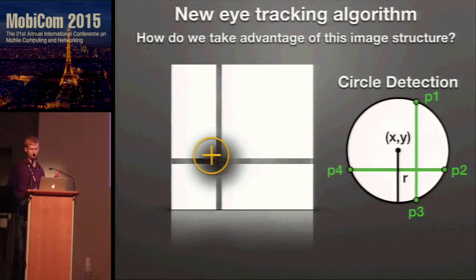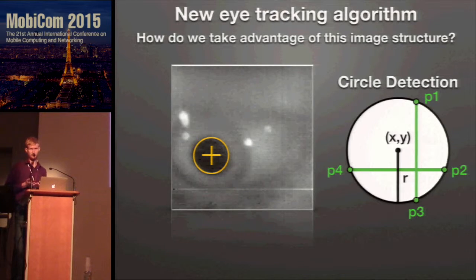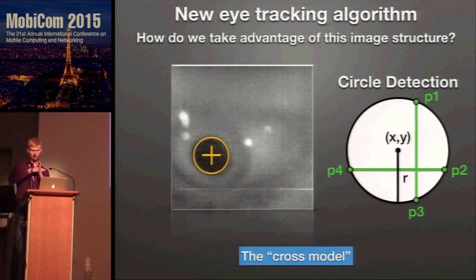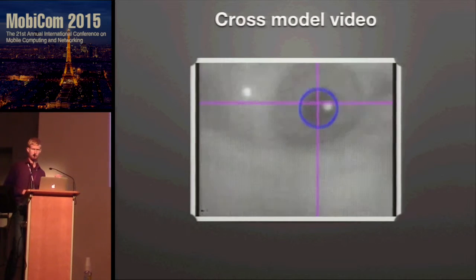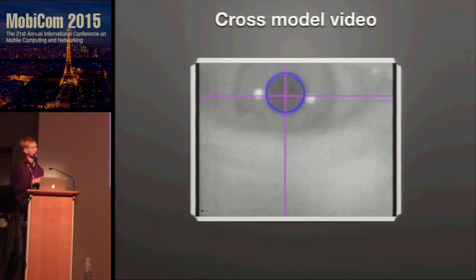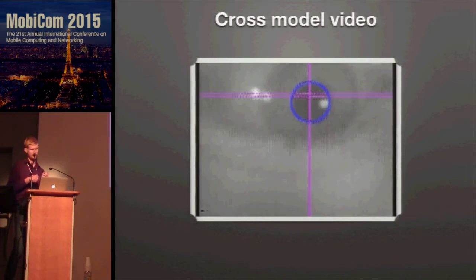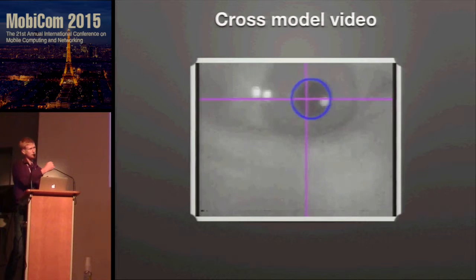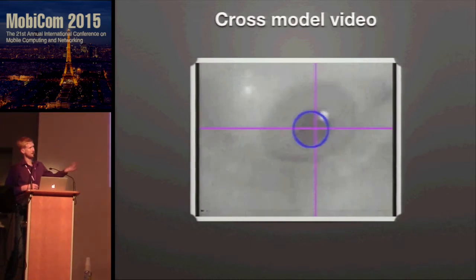Once the computation is done, we generate an estimate of where the eye is and its size — size tells us dilation, which is important for cognition metrics. We call this the cross model because it uses an intersecting right-angle row and column. A nice property of the cross model is that it implicitly tracks the eye by feeding forward the previous eye center estimate to start the next search, and under most situations you can continuously track the eye this way.